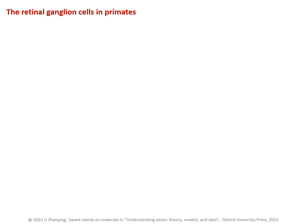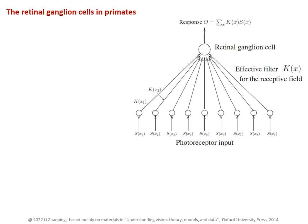In primates, the response of a typical retinal ganglion cell can be approximated as a weighted summation of photoreceptor signals. Let's formulate it this way. S(x) is a function of x - it is the signal from the photoreceptor at image location x. After a brief transient, the steady state response from a ganglion cell is achieved, and let's denote this response value as O.